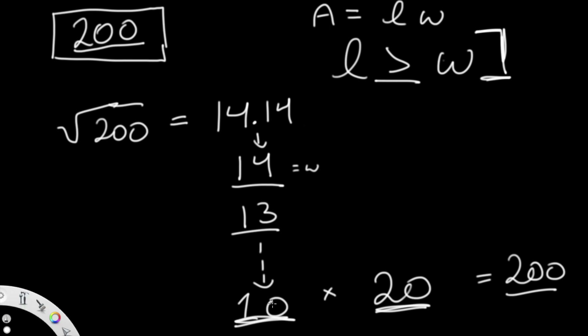Now which value is which? Since length is always greater than or equal to width, the bigger value 20 is our length and the smaller value 10 is our width, and we output that. Let's see how we can do this in code — it should be a lot easier to understand.